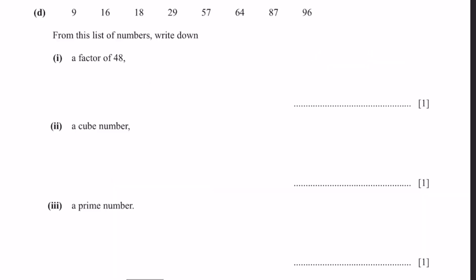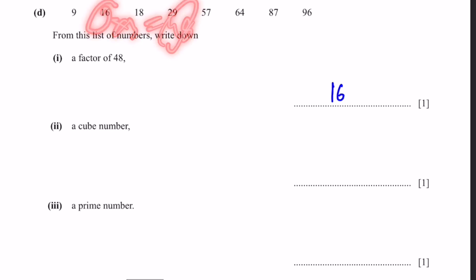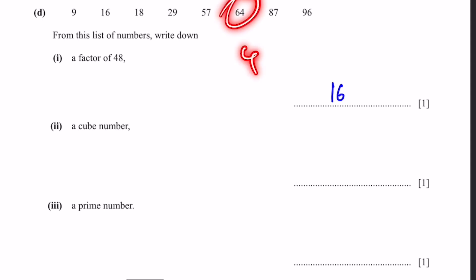Part D: From the list 9, 16, 18, 29, 57, 64, 87, 96 — write down: (1) a factor of 48: 16, because 16 × 3 = 48; (2) a cube number: 64, because 4 cubed = 64; (3) a prime number: 29, because it's only divisible by 1 and 29.